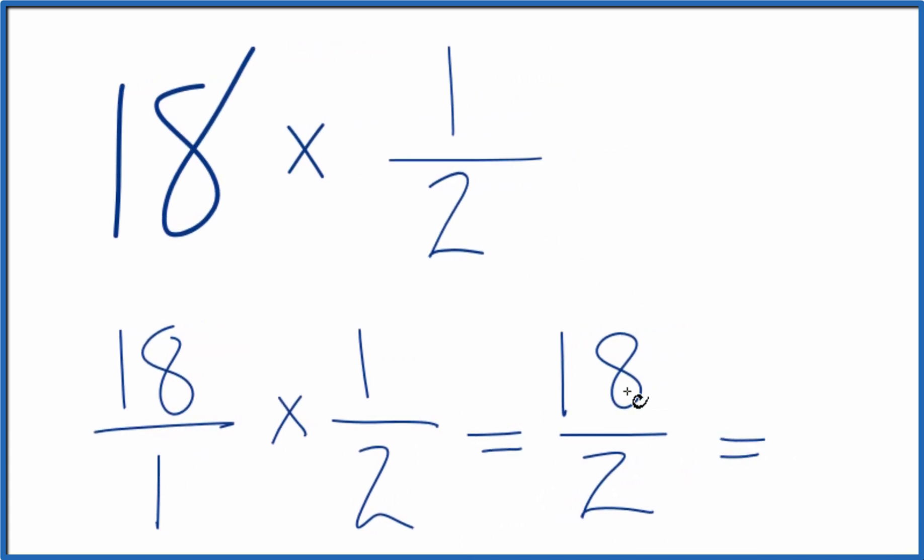And since 2 goes into 18 evenly, 2 times 9, that's 18. We could also say that 18 times 1 half, that equals 9.